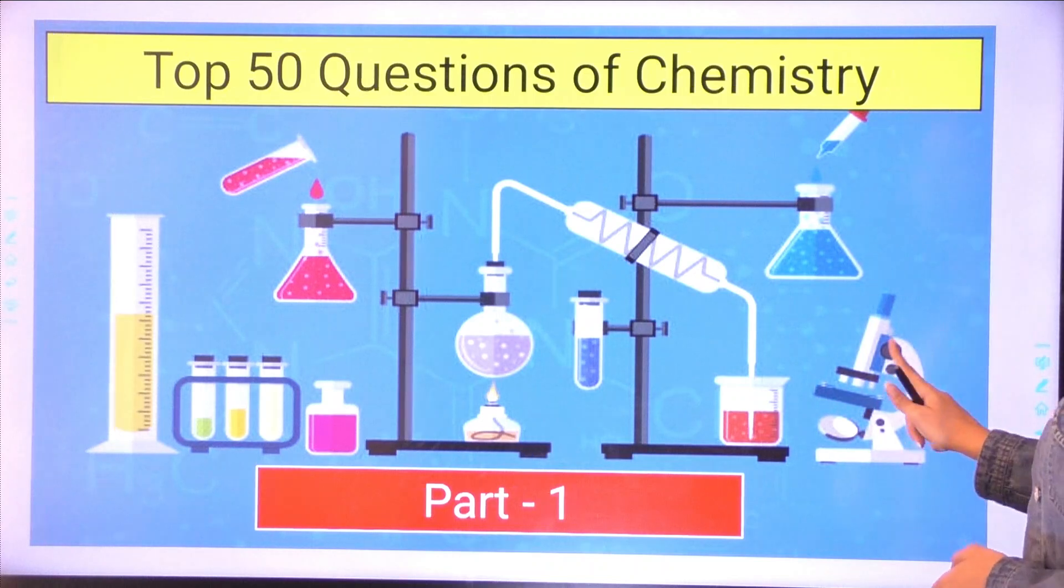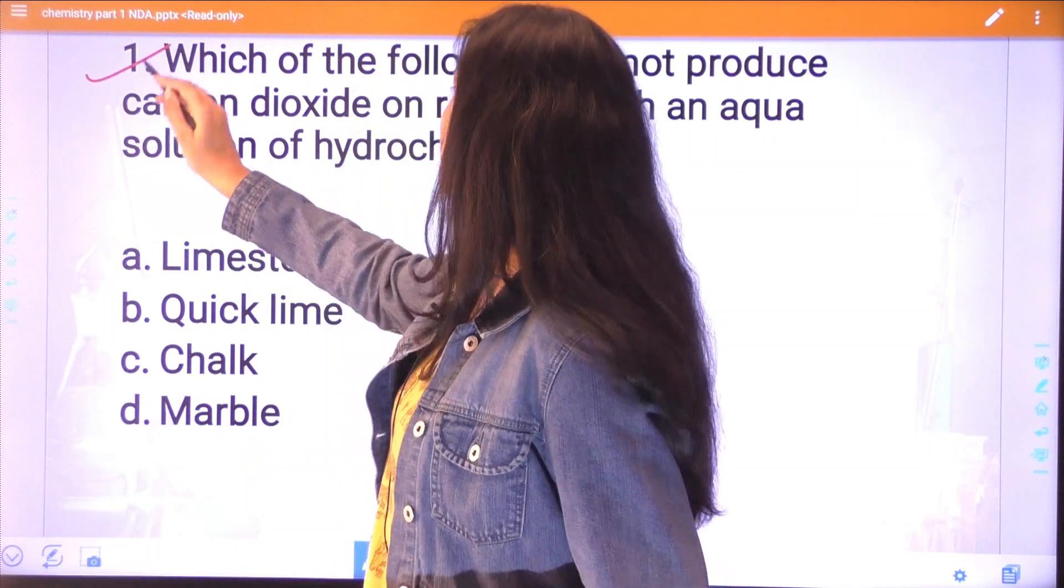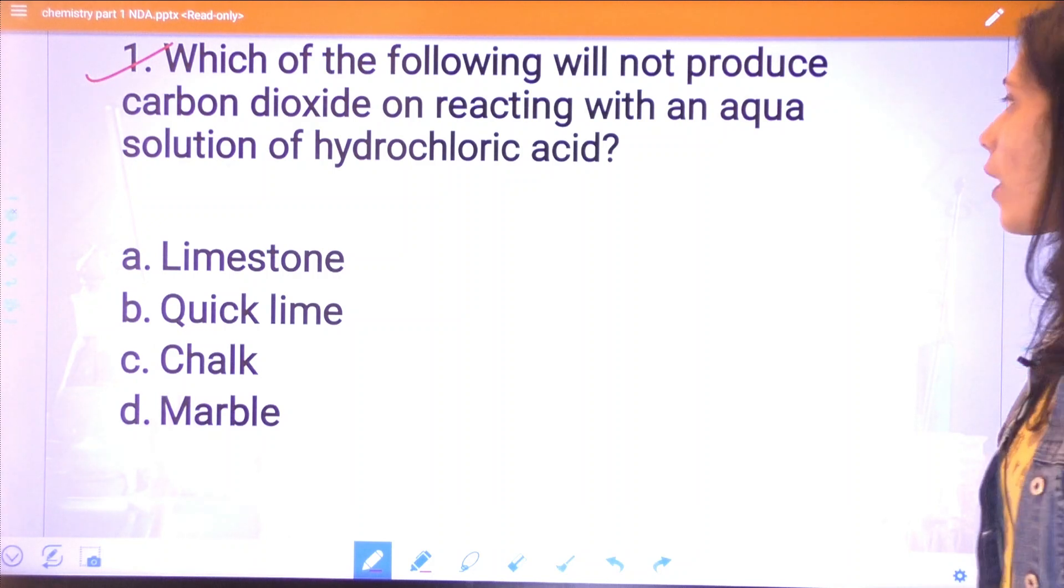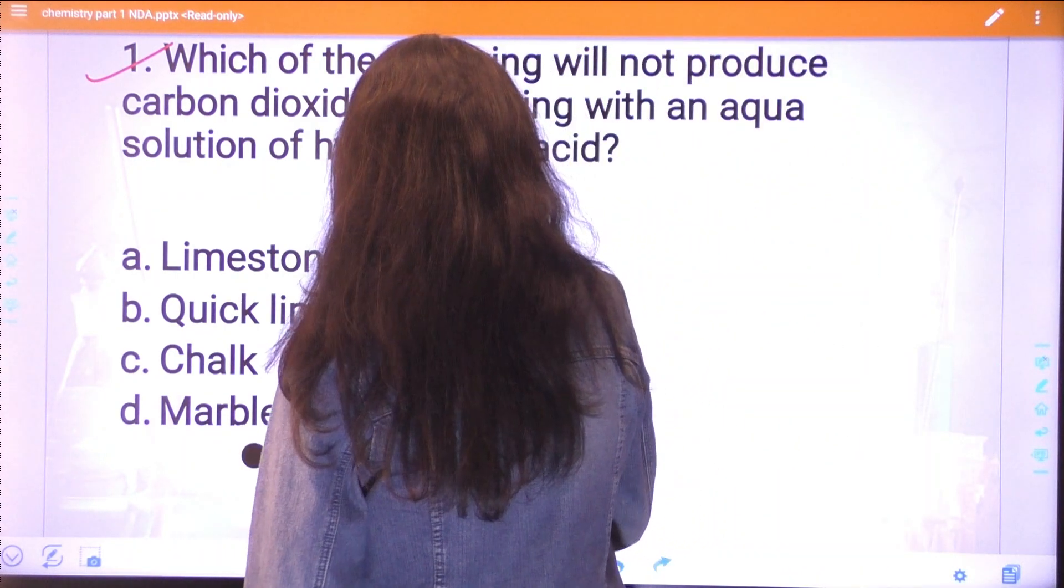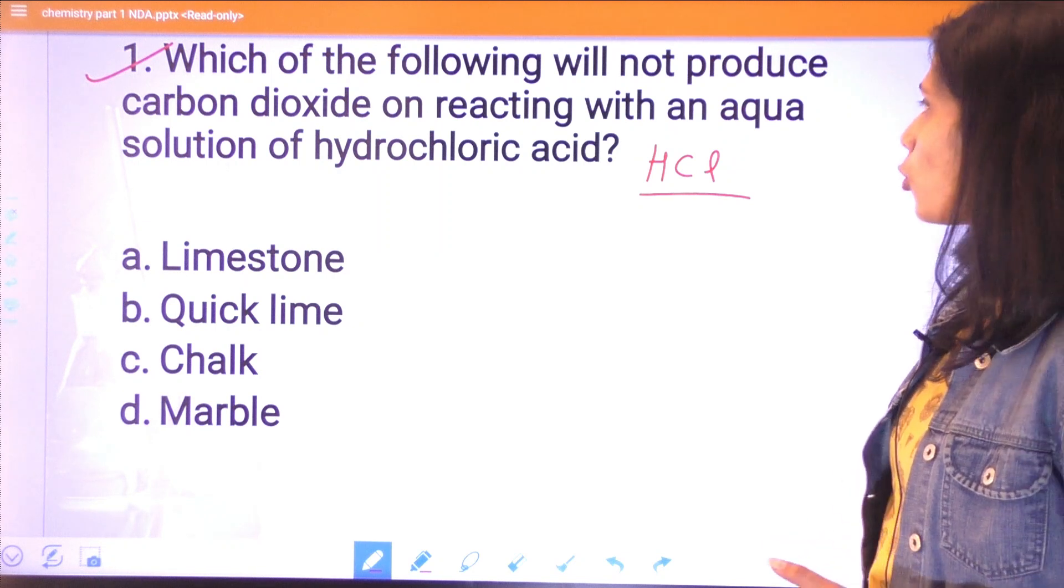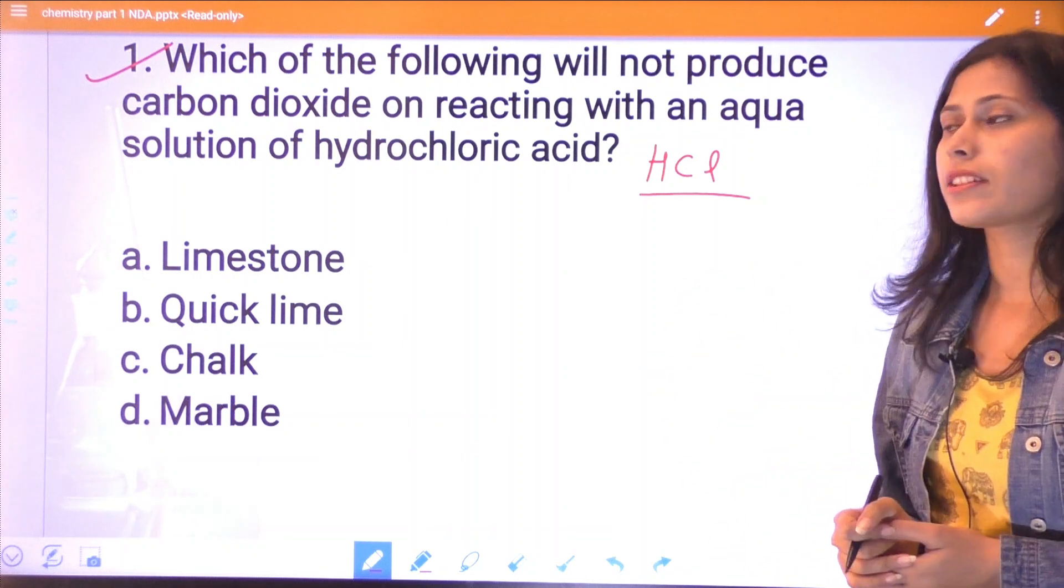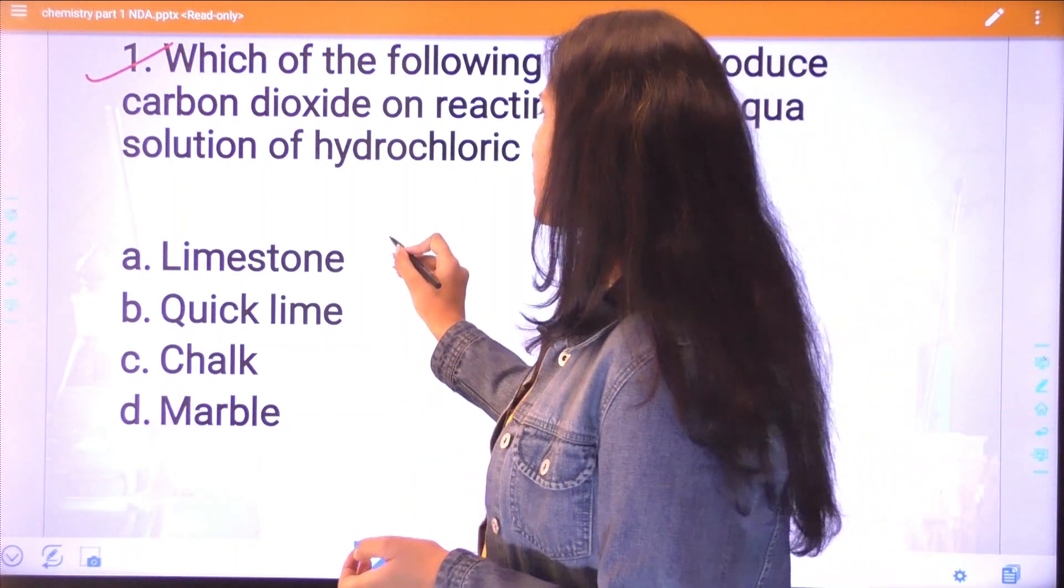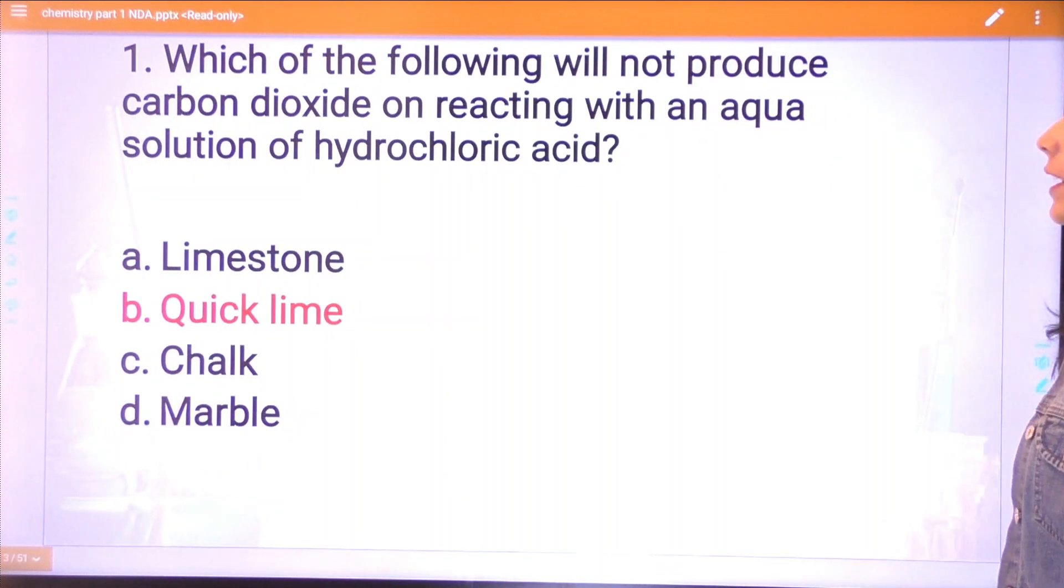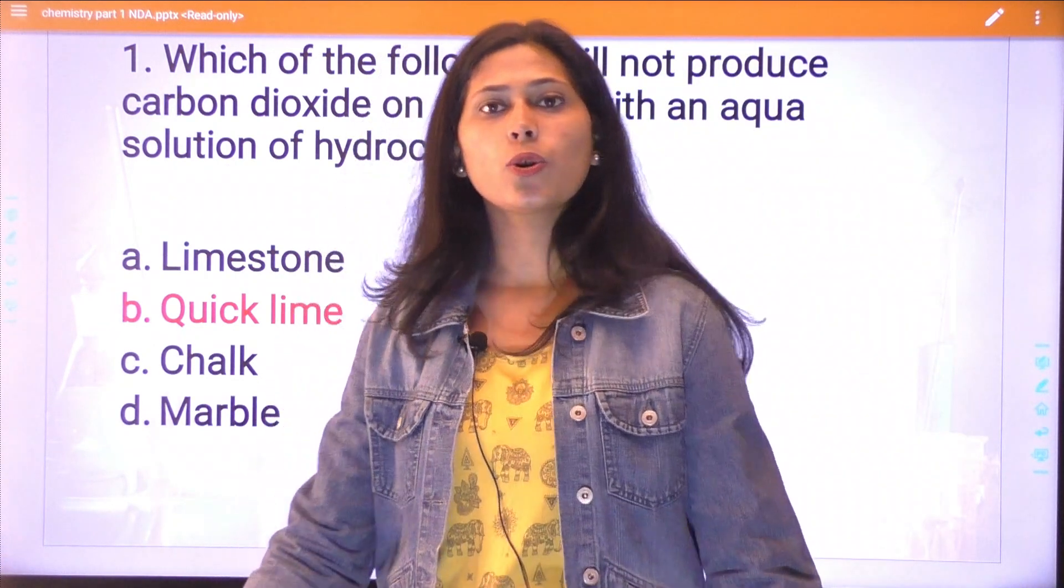Without any delay, let's get started with our first question. Which of the following will not produce carbon dioxide on reacting with an aqueous solution of hydrochloric acid? Hydrochloric acid means HCl. What are the things that do not produce CO2 when it reacts with HCl? Your options are limestone, quicklime, chalk, or marble. The correct answer is quicklime. Quicklime, if you react with HCl, will not release CO2.